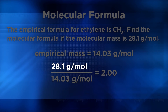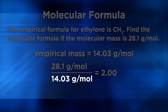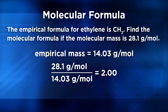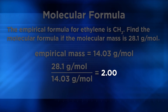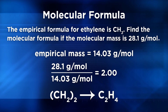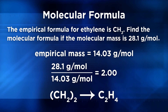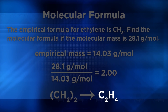We divide 28.1 grams per mole, the molecular mass, by 14.03 grams per mole, the empirical formula mass. Grams per mole cancels out, leaving an integer of 2.00. Then in the last step, we take the integer 2 and multiply it by each subscript in the empirical formula. So our molecular formula has two carbons and four hydrogens, which we write as C2H4.